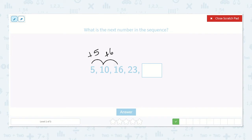Now from 16 to 23 is 7, so I see the pattern plus 5, plus 6, plus 7, plus 8. Alright, so I know that 23 plus 7 is 30, so 23 plus 8 is 31.